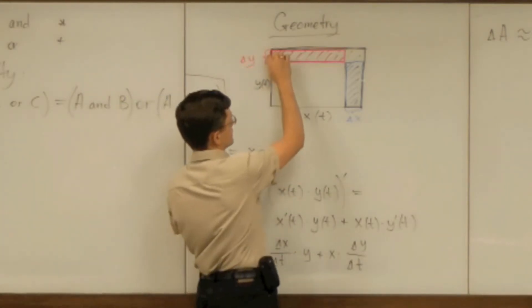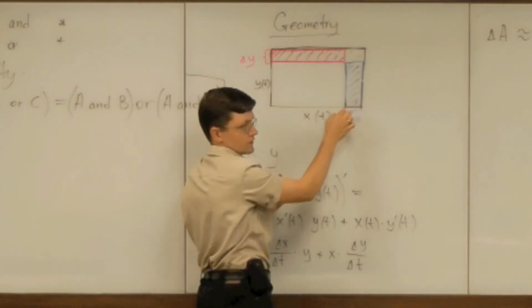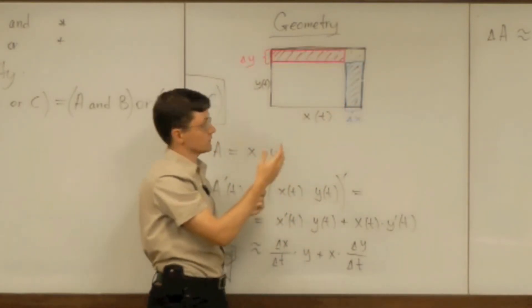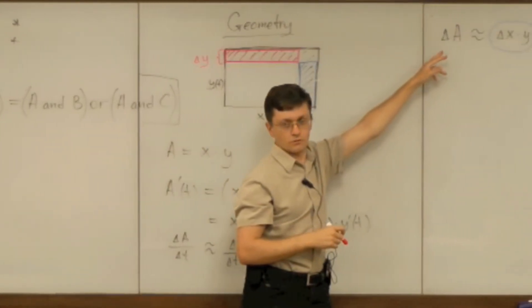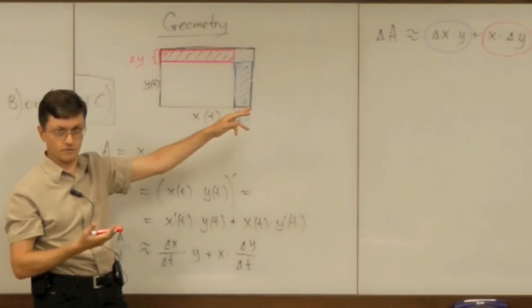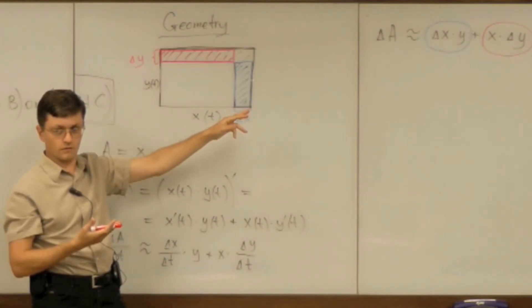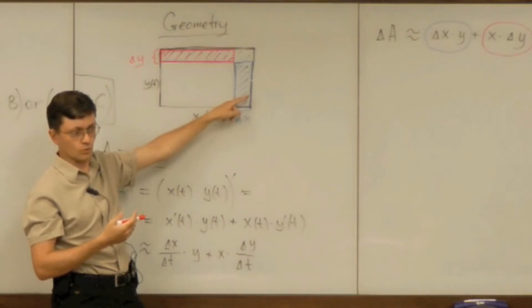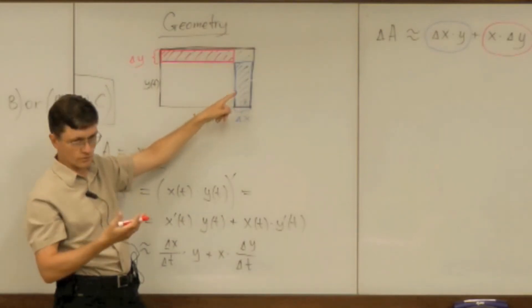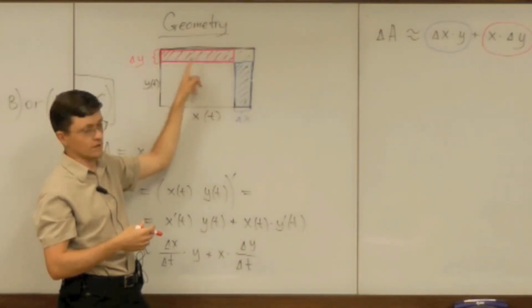So the whole thing here becomes very narrow. And how come that approximate equality will become better?